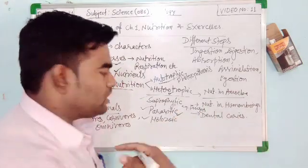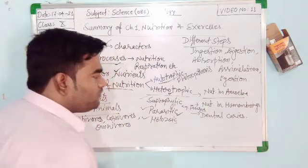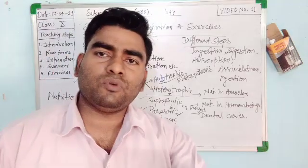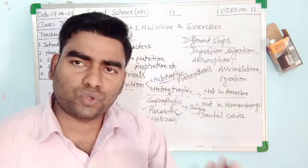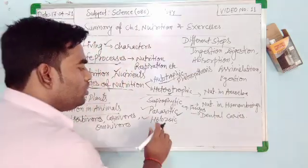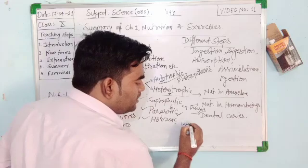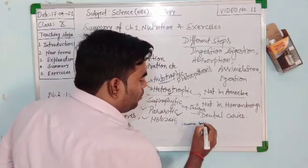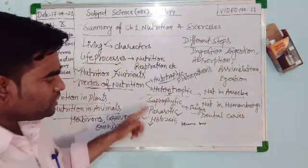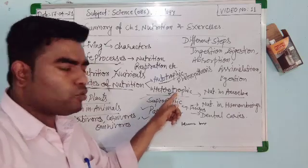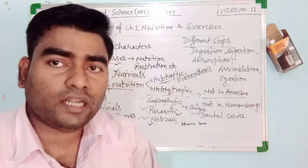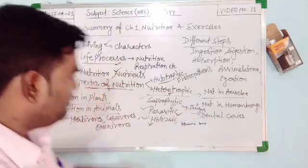The holozoic mode of nutrition involves an organism engulfing or ingesting another complete organism. We human beings follow the holozoic mode of nutrition. These are the three types of heterotrophic nutrition in which organisms depend on others for their food.